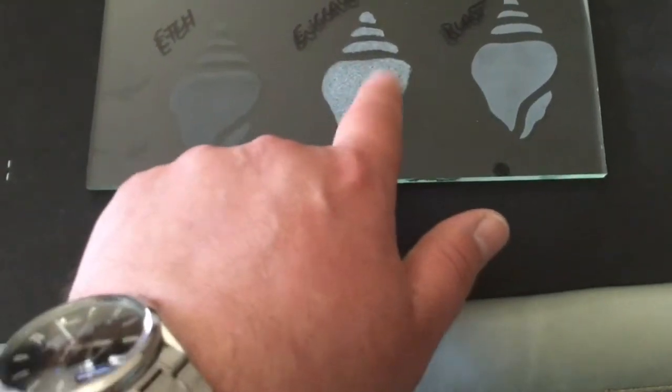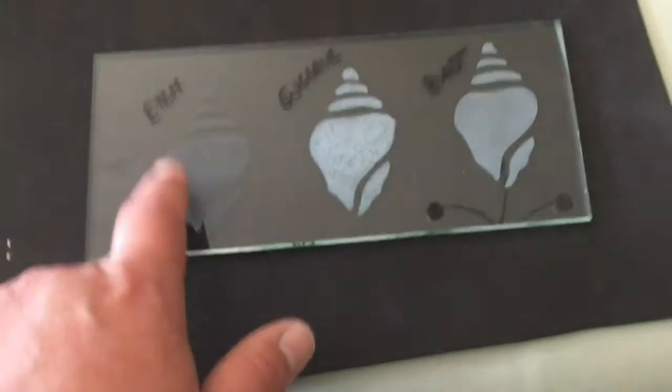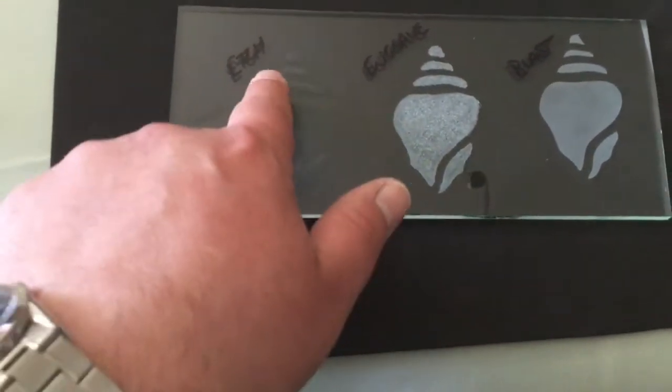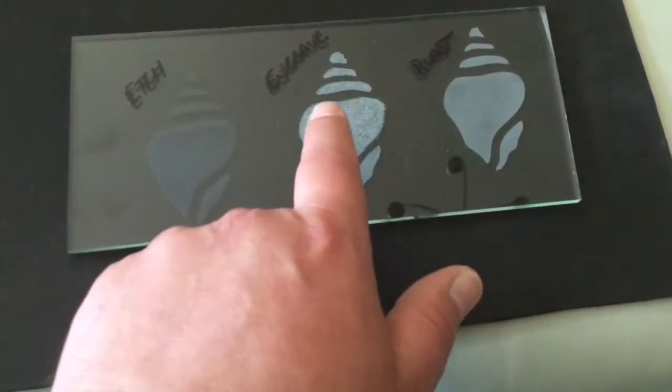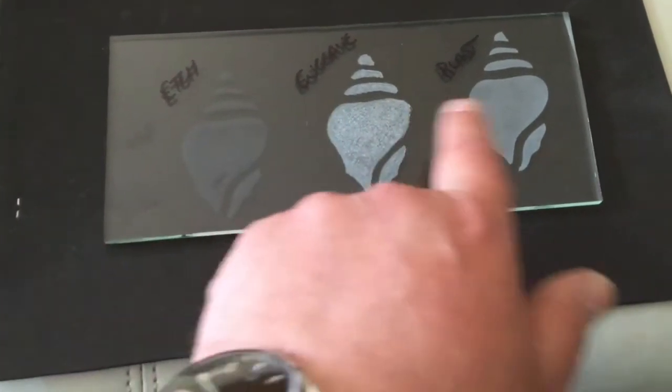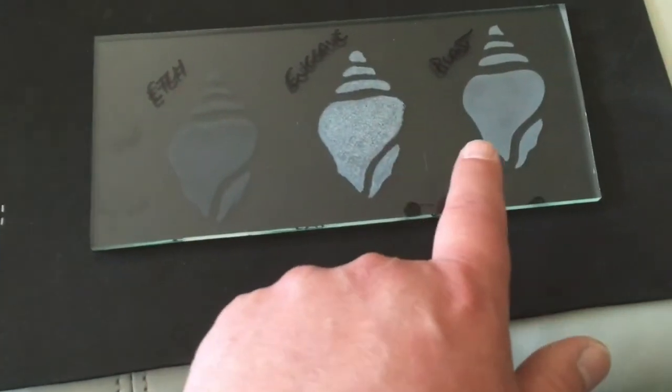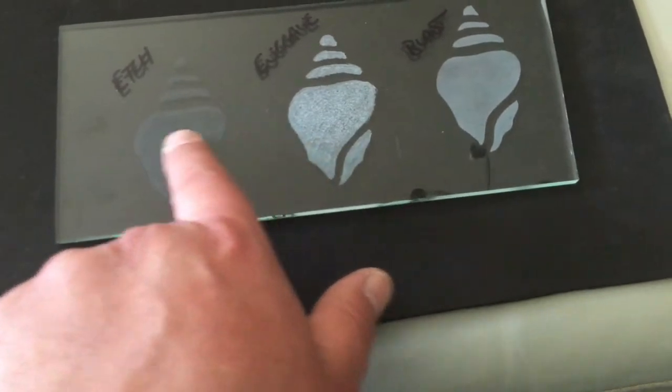First I'll try the engraving. I played with it once but not really a full pattern. And I've tried the etching cream a couple of times. So we'll go through each method: blasting first, then engraving, then the etching. And we'll talk about the three different methods and the pros and cons of each of them.